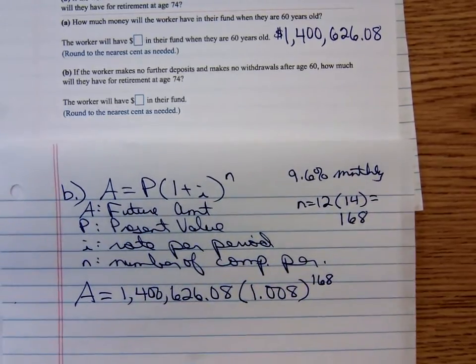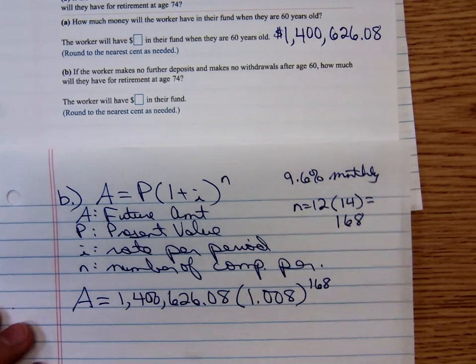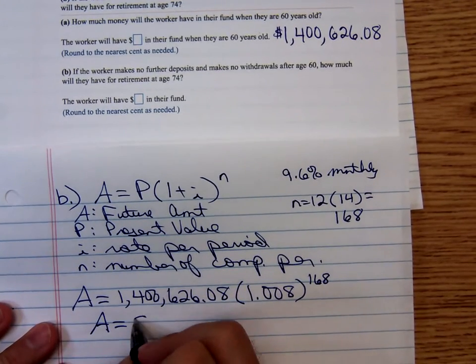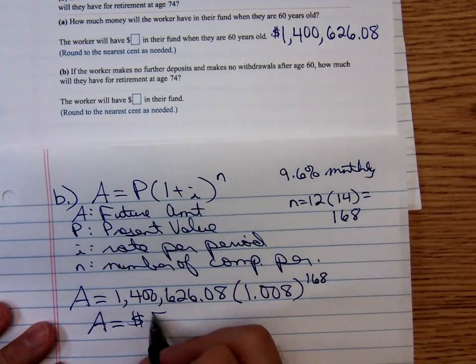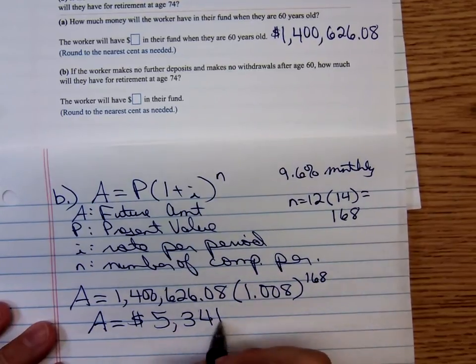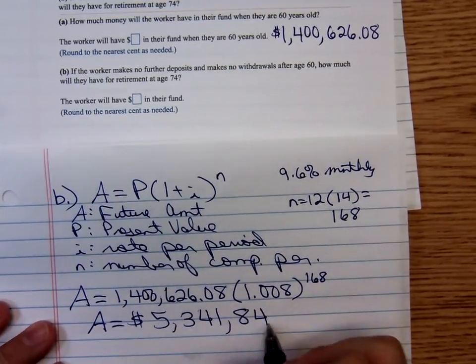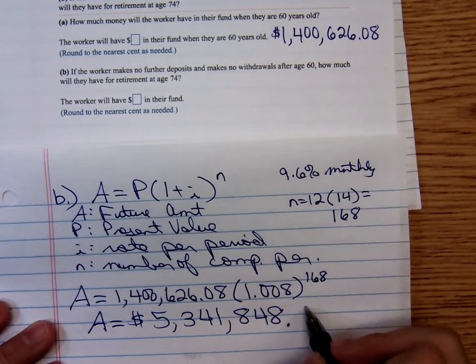Oh wow, that's a big total. This person's going to have $5,341,848.95 in their retirement account.